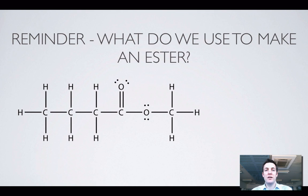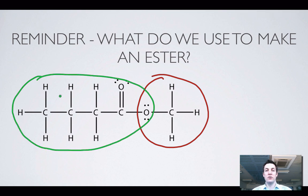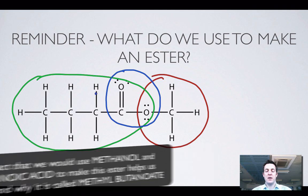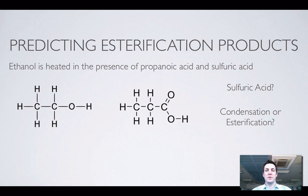We're just going to remind ourselves of what we already know about esters. This ester, which I'd call methyl butanoate, has got a part of it that looks like an alcohol and a part that looks like a carboxylic acid. That should give us a clue as to what we use to make them — if you take an alcohol and a carboxylic acid, you're going to make a molecule with an ester functional group.